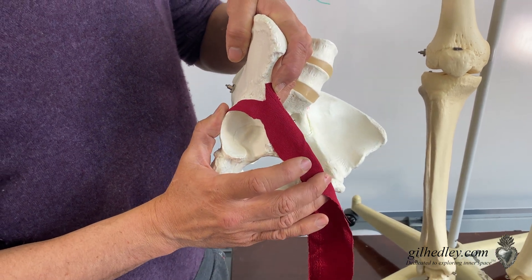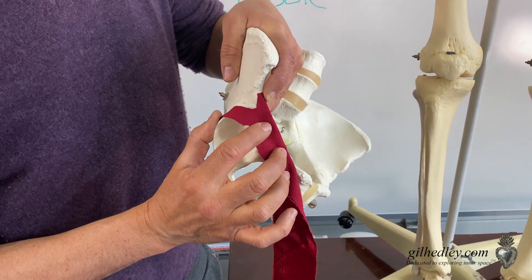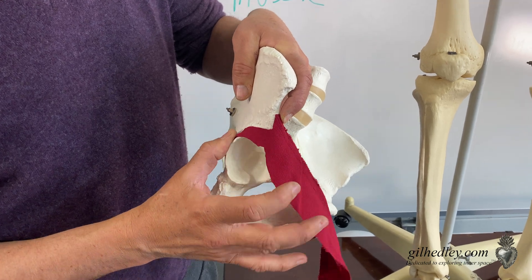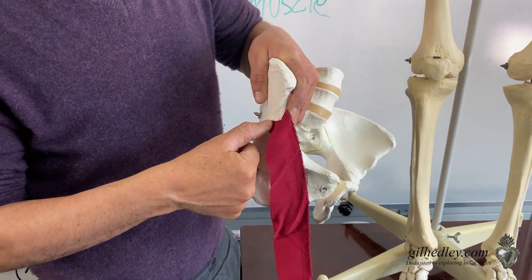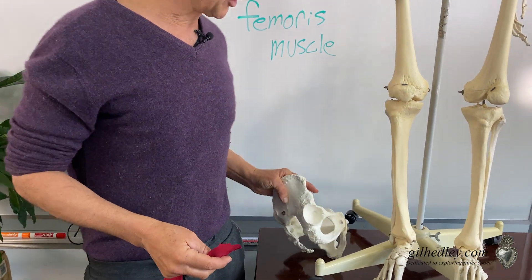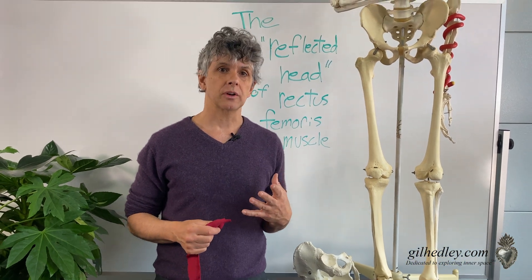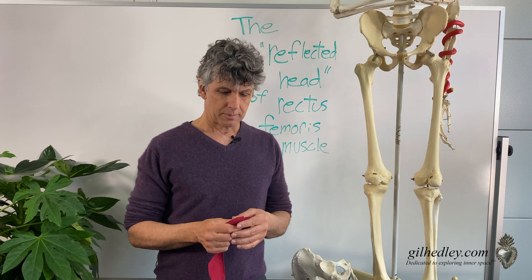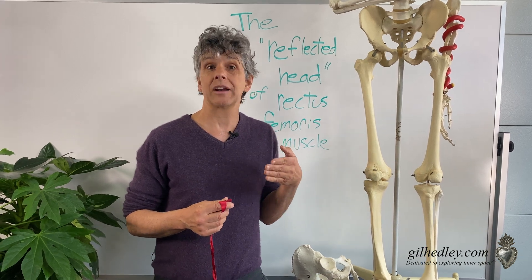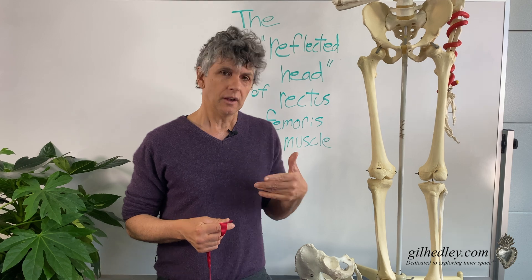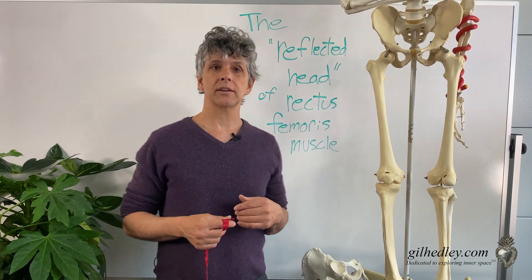So the next time you're playing with your pelvis, see if you can feel the reflected head. As you contract your quadriceps femoris, you'll feel the rectus femoris contract. Put a thumb in there and you will feel the reflected head. It's always my hope to improve the specificity with which folks do their bodywork, because the more specific you are and the more intimately you can connect with what's actually there — as opposed to the story in your head — the more service you'll be able to do for your clients. So that's the reflected head of rectus femoris muscle.